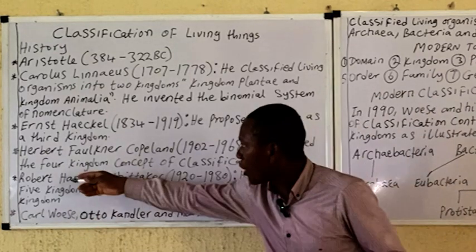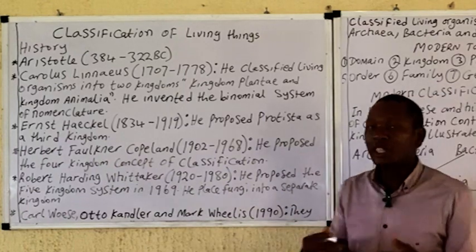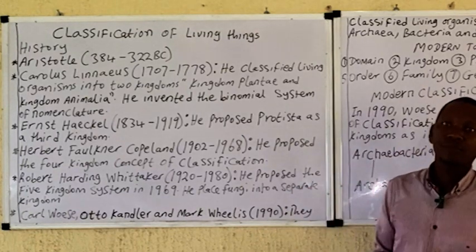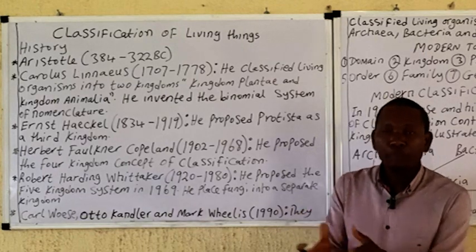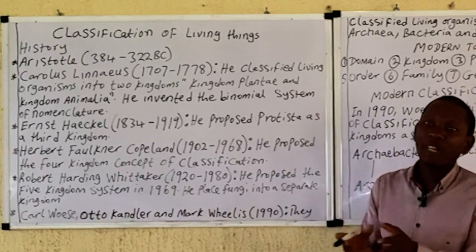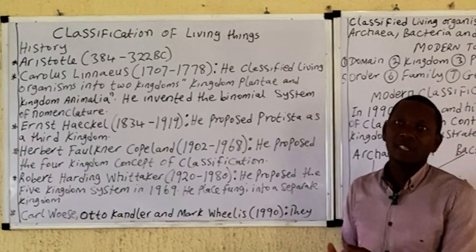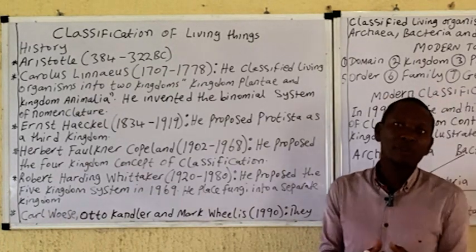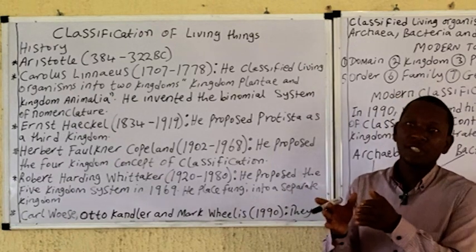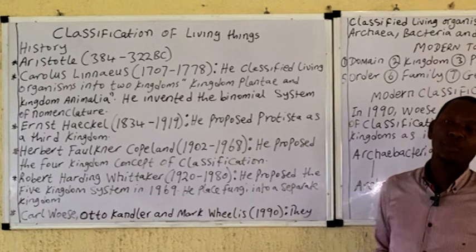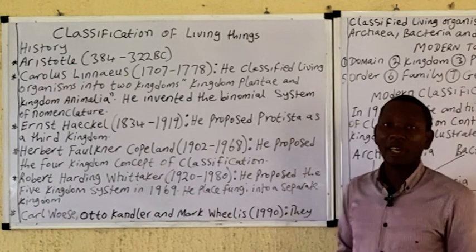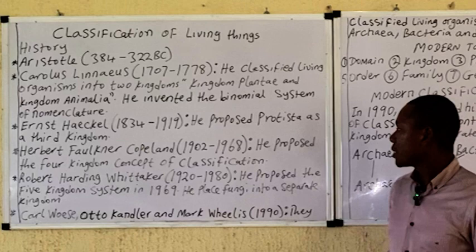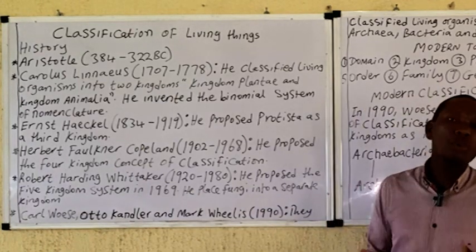Herbert Copeland divided living organisms into four kingdoms — he proposed the four-kingdom concept of classification. In this case, he separated bacteria, blue-green algae, and prokaryotes from the others and assigned them to a new kingdom called kingdom Monera. Kingdom Monera comprises prokaryotic organisms as well as blue-green algae. The remaining kingdoms retained were kingdom Protista, kingdom Plantae, and kingdom Animalia.